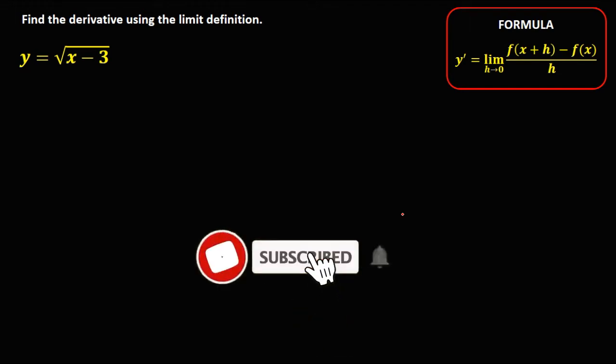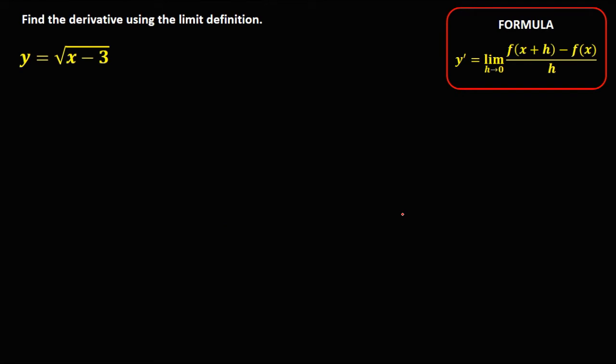Let's have this problem: find the derivative using the limit definition. This is the formula for solving the derivative using the limit definition. Note that in the formula, the numerator has two terms. The first term, x is replaced by x plus h. From the given, y equals the square root of x minus 3.